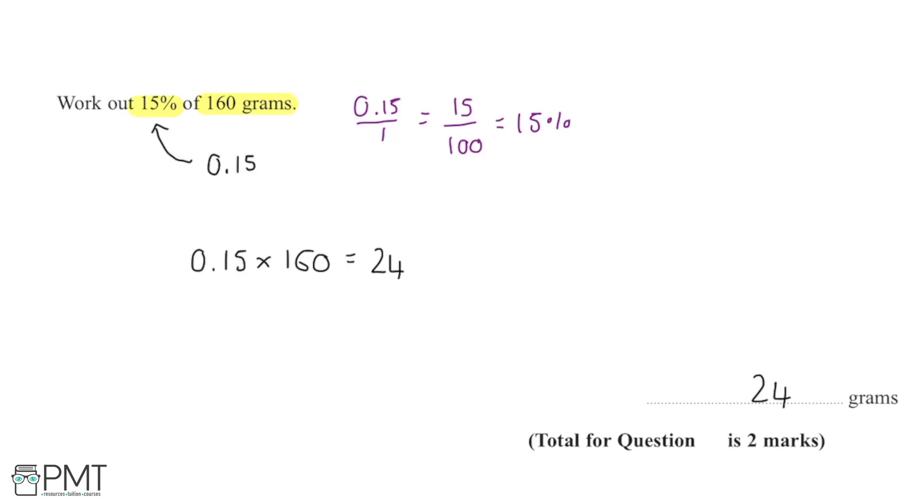Similarly here, if I wanted to go about this in a different way, I could work out 1% of 160 and then multiply this up by 15 in order to get 15%. Sometimes that way might make a bit more sense in your heads and that's totally fine.